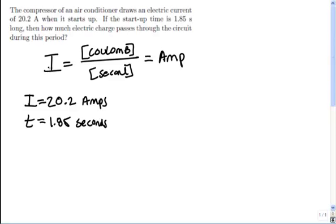So the charge, if I is equal to Coulombs per second, then Coulombs, or charge, is going to be equal to I times T.